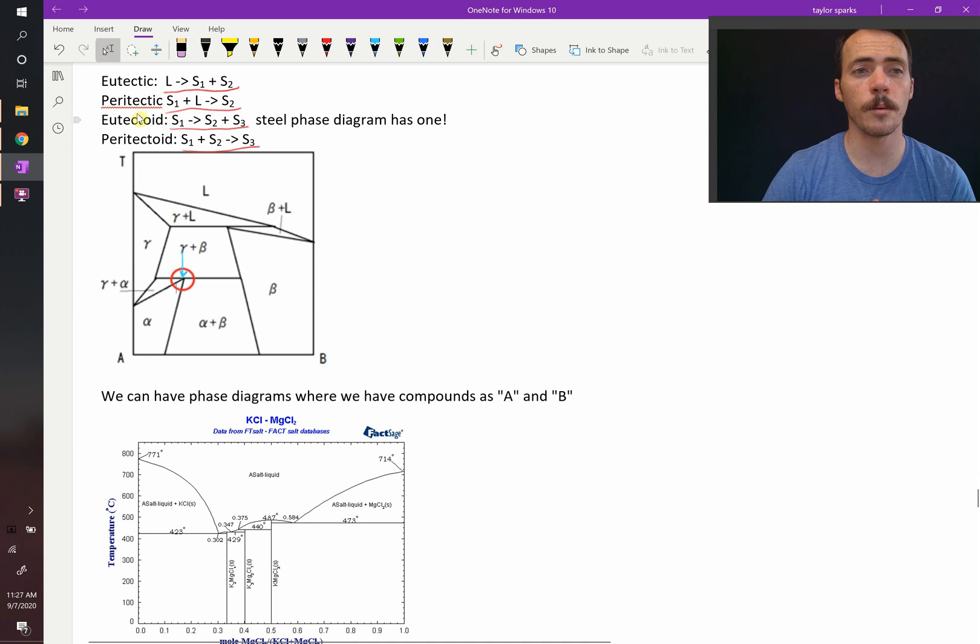So these become important. For example, eutectoid, the steel phase diagram has a really important eutectoid, which gives rise to its properties, which we'll cover in just a few videos.